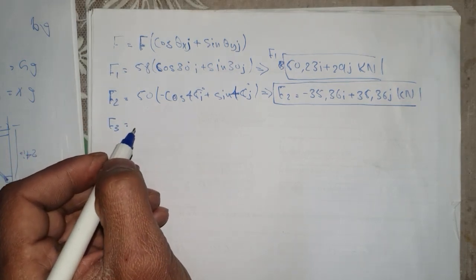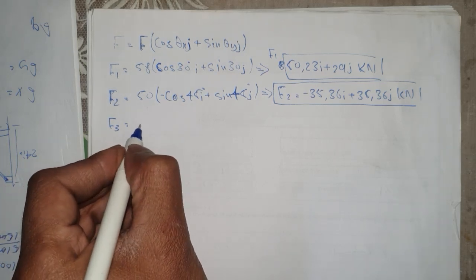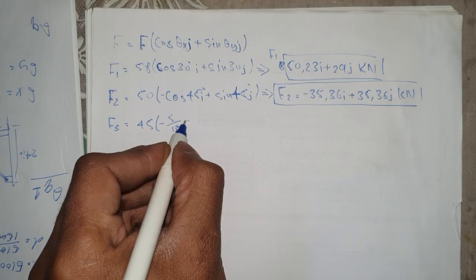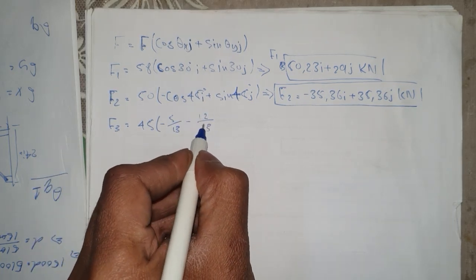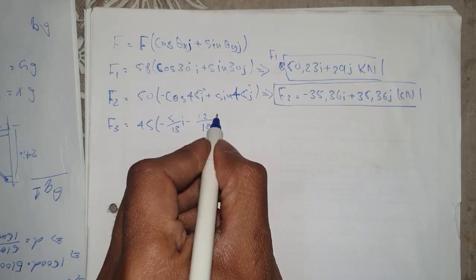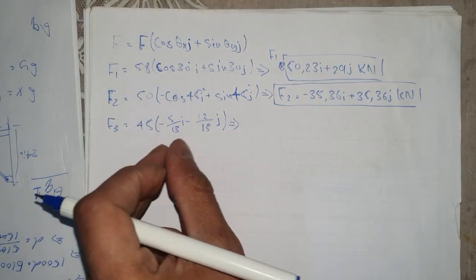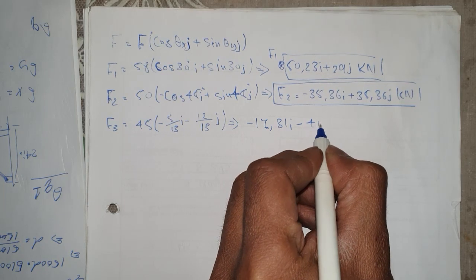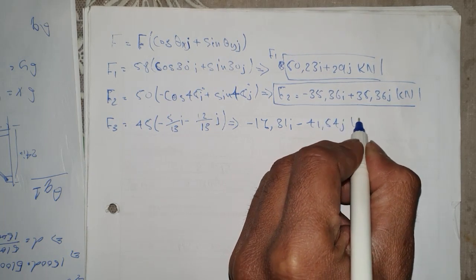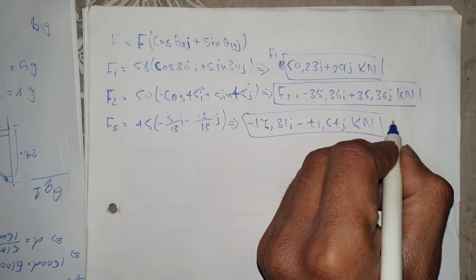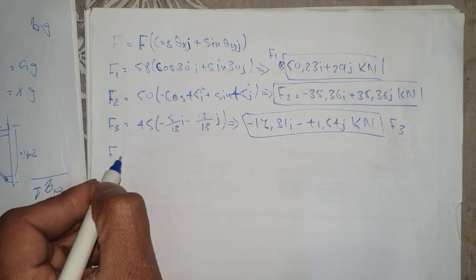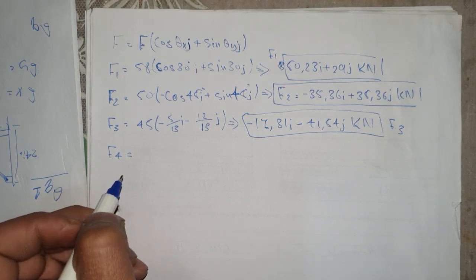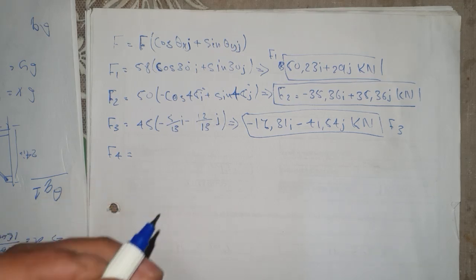For F3, we didn't have an angle so we use the triangle ratios: 45 times (negative 5/13 i plus negative 12/13 j), giving F3 equal to minus 17.31i minus 41.54j kilonewtons. For F4, acting only along the x-axis, F4 equals 40i kilonewtons.